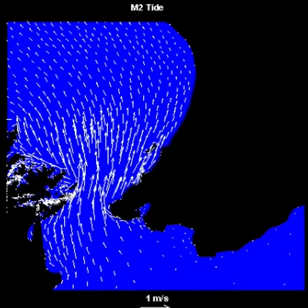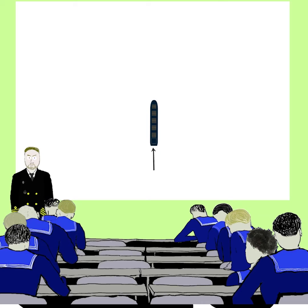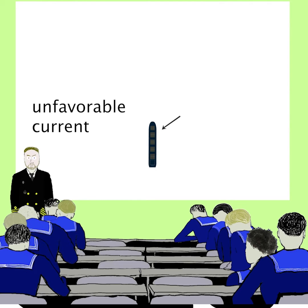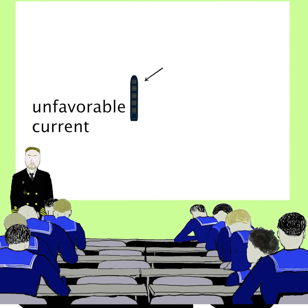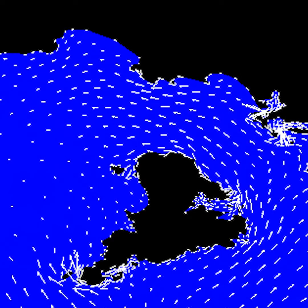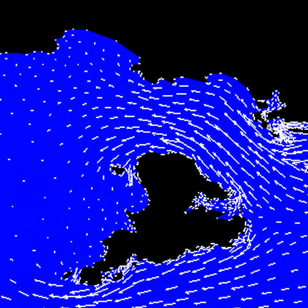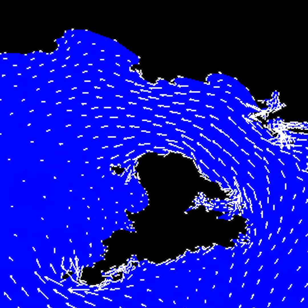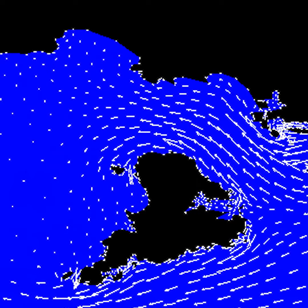Currents can significantly influence a ship's navigation — accelerate movement over ground, decelerate it, and create a difference between a ship's course and course over ground. It's crucial for navigators to understand ocean currents to effectively plan and carry out navigation.